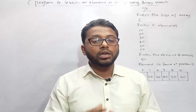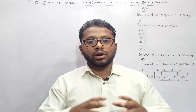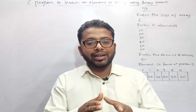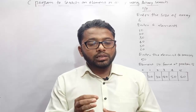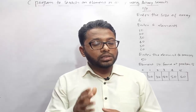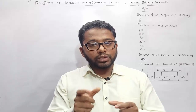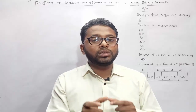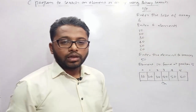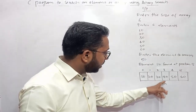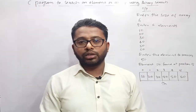Binary search also works on the same principle. You will be given a list or an array of items and you first need to divide that array into two parts by finding out the middle element. Then to find the key item there can be three cases. The first case is the item which you are searching might be present at the middle location of the array. If it is found at the middle location, you write the message that the item is found at that location.